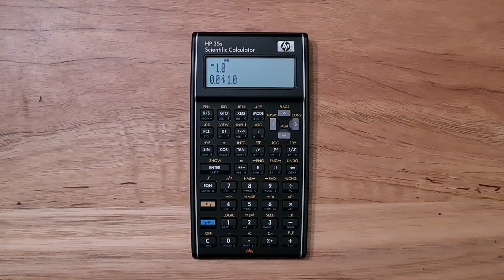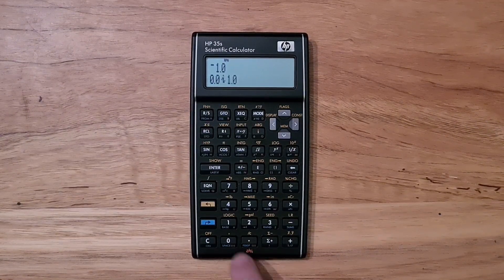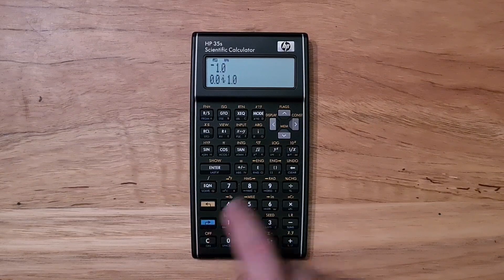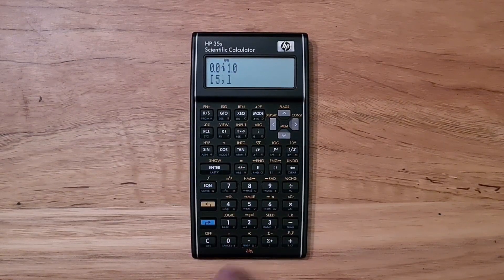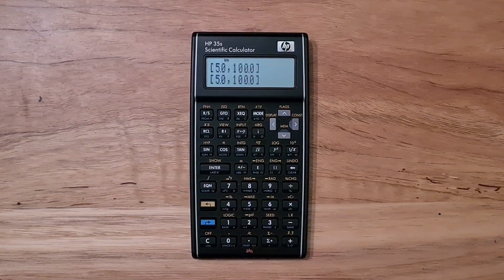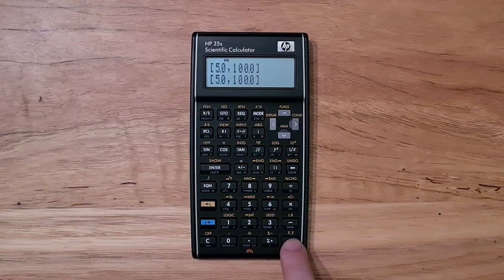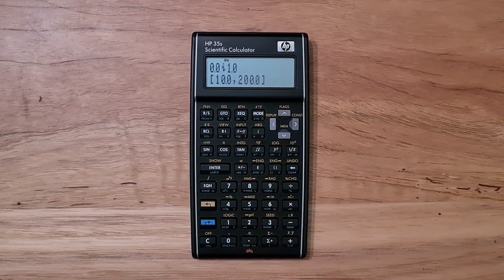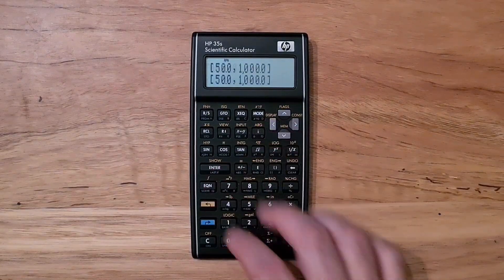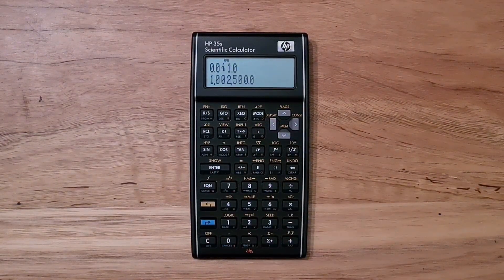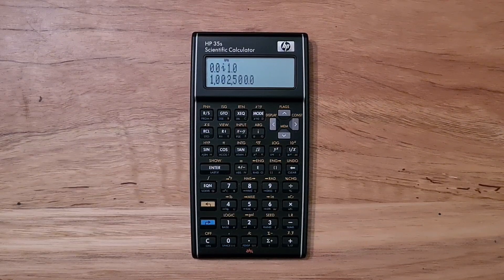Vectors are entered using square brackets and comma keys, which is a little bit awkward. But again, they're displayed on one line, which is nice. They can be added and subtracted, and you can multiply or divide them by a scalar. You can also multiply two vectors together to yield the dot product. There's no cross-product function.